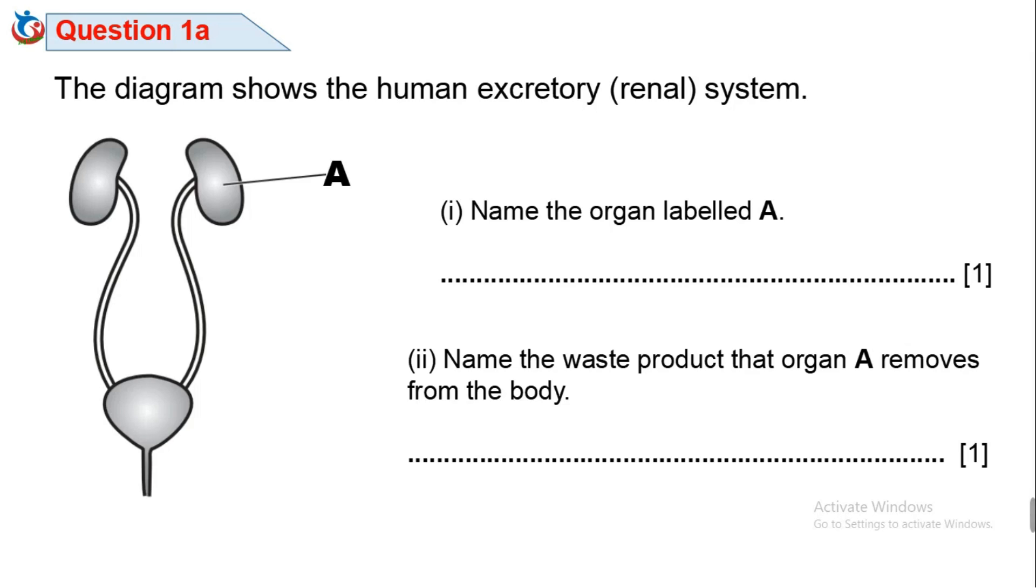The description of the diagram says excretory system. The excretory system is made up of organs such as skin, liver, large intestine, lungs and kidneys.